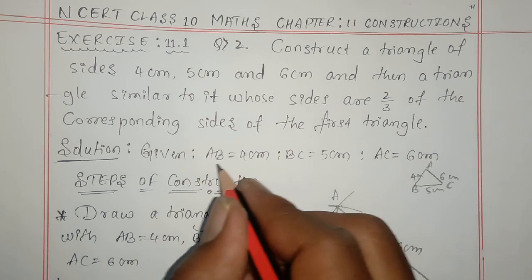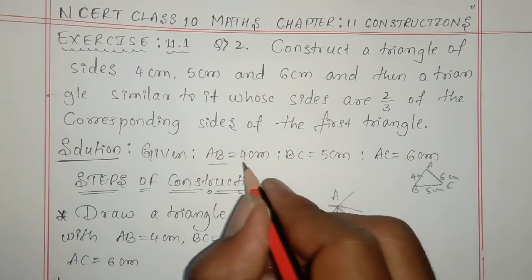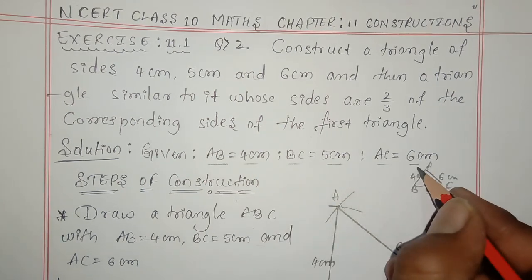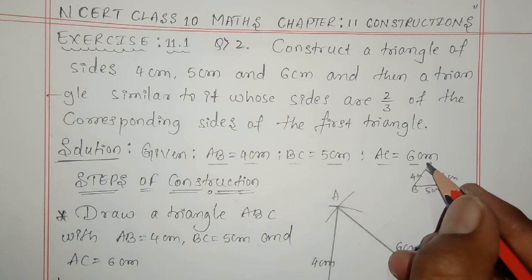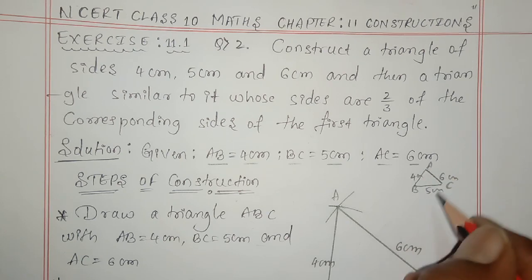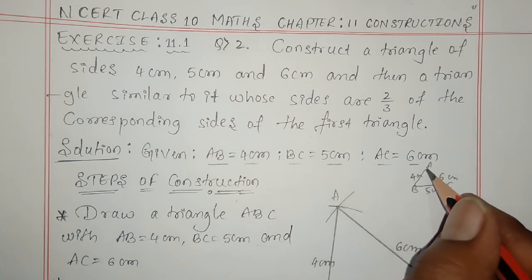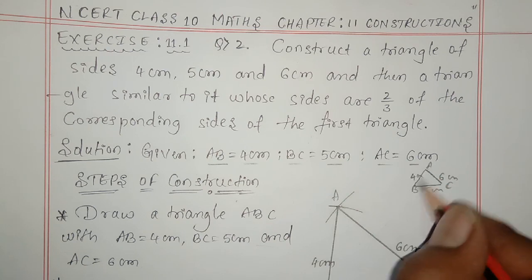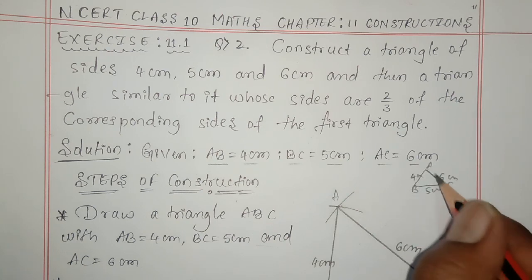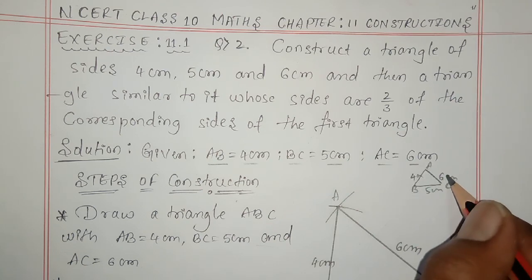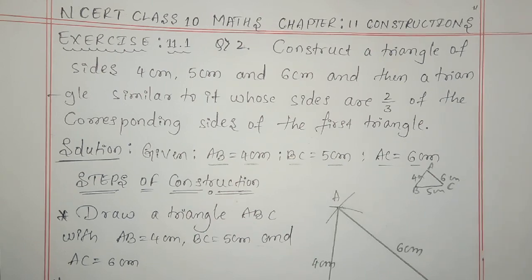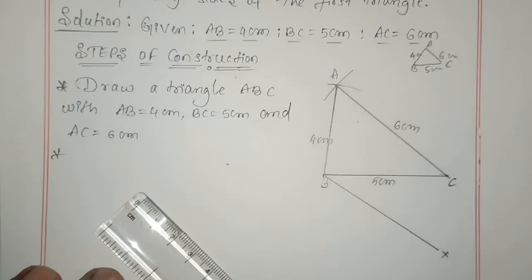Given: AB equals four centimeter, BC equals five centimeter, and AC equals six centimeter. First you can construct a rough diagram — AB equals four, BC equals five, and AC equals six.